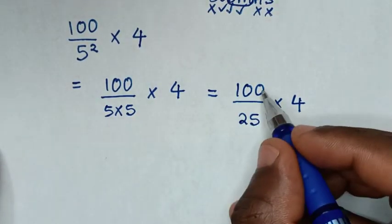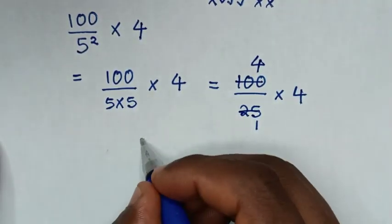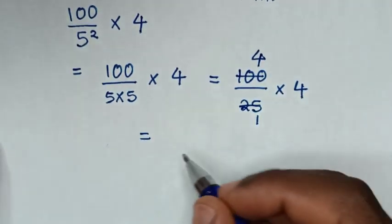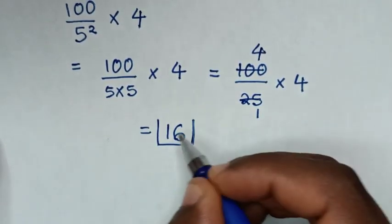Then to simplify 100 divided by 25, here by 1 and this by 4. So it will be equal to 4 times 4 is 16. Therefore, this is our final answer.